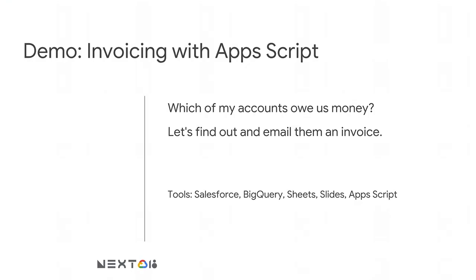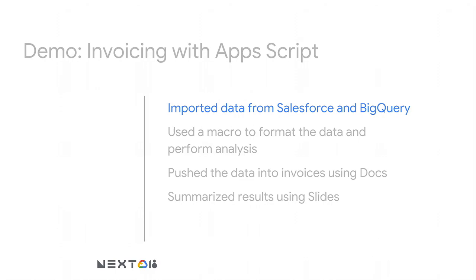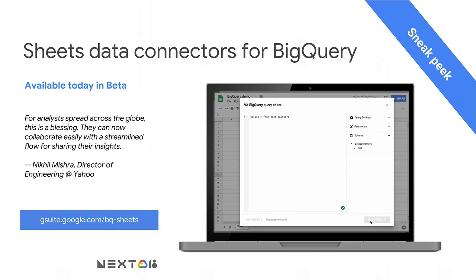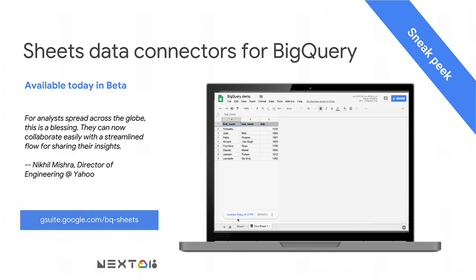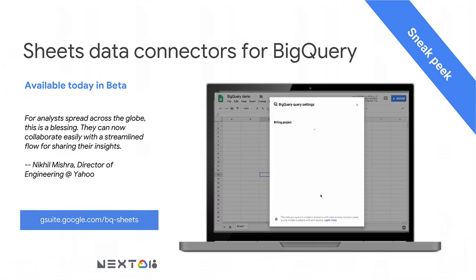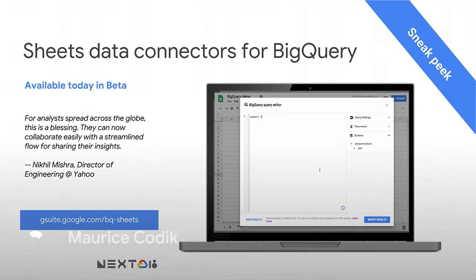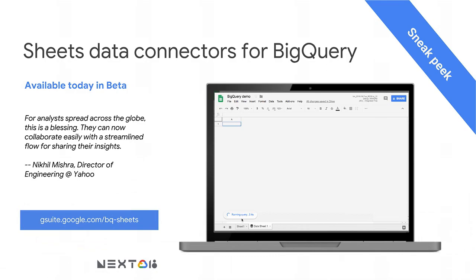That's our first demo. As you can see, it's pretty straightforward to do this kind of operation: getting data from an external system, putting it in Sheets, manipulating it either by hand or using a macro, and getting things into Slides. To summarize what we saw: we hit a public API, used the new native integration with BigQuery to get the data we need, formatted and analyzed it, pushed the data to Docs using an invoice, and summarized the results in Slides. The BigQuery integration with Sheets is available in beta — go to gsuite.google.com/bq-sheets to sign up. I'd like to hand it off to Josh to tell you about our REST APIs.